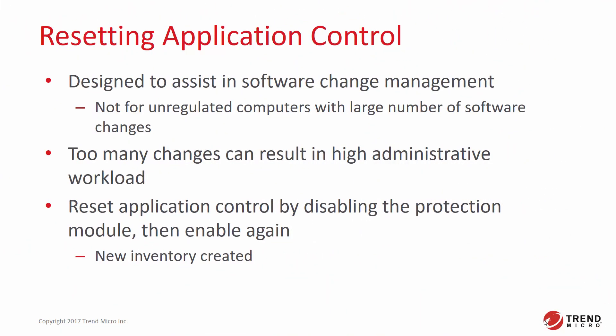Application Control is designed to assist your software change management process. It should not be used for unregulated computers with continuous and large numbers of software changes. Too many changes make large rule sets that consume more memory. If you don't use maintenance mode during authorized software updates, too many changes can also result in high administrator workload because they must manually create allow rules. If unrecognized software changes exceed the maximum, Application Control will stop detecting and displaying all of the computer's software changes. This prevents accidental or malicious stability and performance impacts — consuming too much memory, disk space, and network bandwidth. Deep Security Manager will notify you through alerts and an event log, and you must resolve the issue to continue detecting software changes.